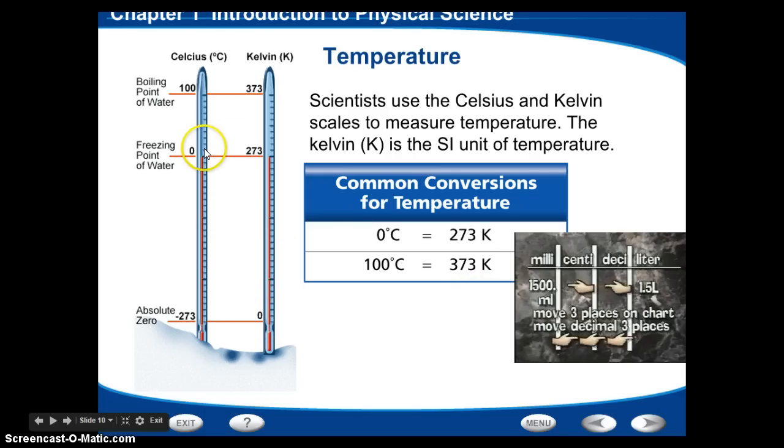And we go up from there. So Celsius, when it's the freezing point of zero, Kelvin is 273. Boiling point for 100 degrees Celsius, Kelvin is 373.